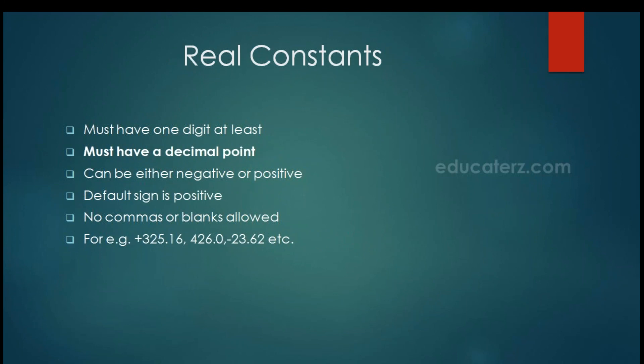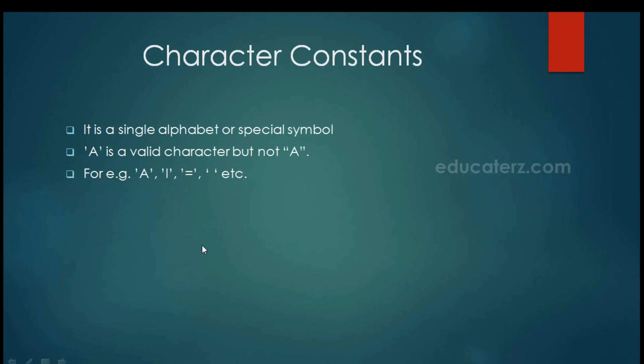Real constants must also have at least one digit, but they must have a decimal point. So any value with a decimal point is a real constant. It can be negative or positive; by default it is positive. Commas and blank spaces are not allowed. These are the examples of real constants shown here.